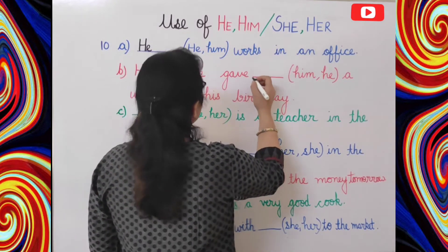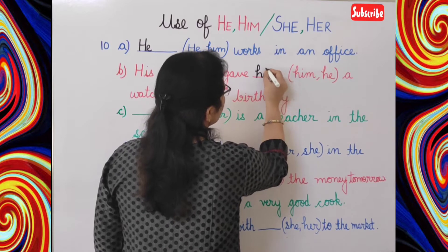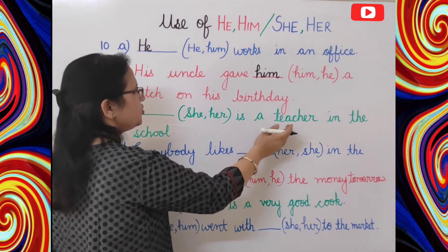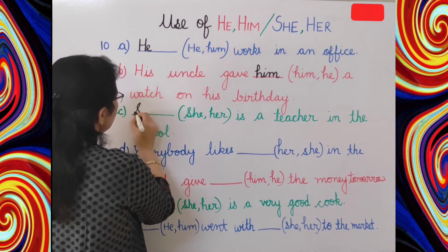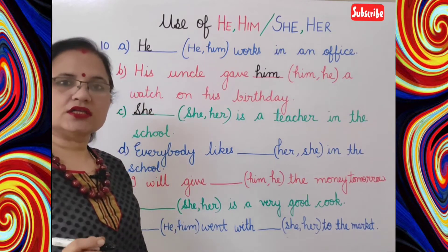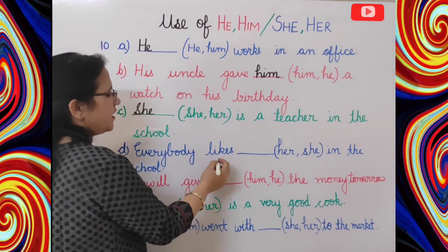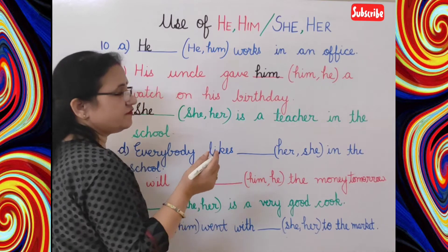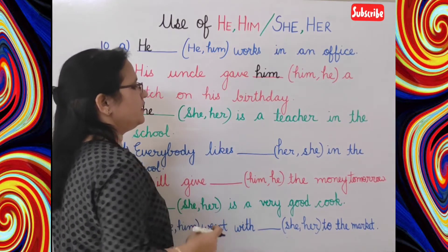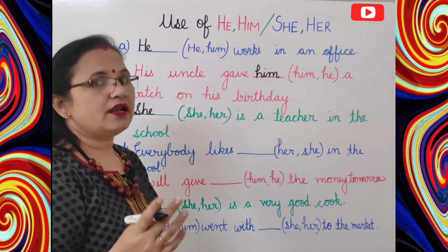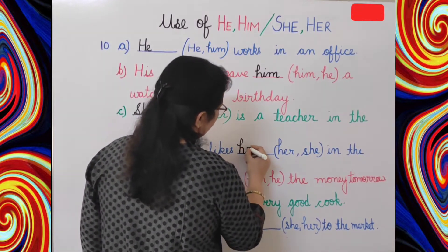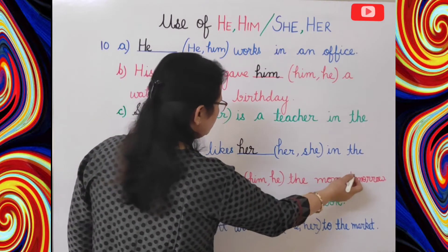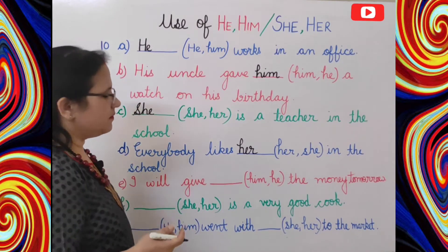His uncle gave him a watch on his birthday. Next: dash is a teacher in the school — she is a teacher in the school. Next: everybody likes dash in the school. The action word or verb is 'likes', so after the verb we use 'her': everybody likes her in the school. Next: I will give dash the money tomorrow — I will give him the money tomorrow.